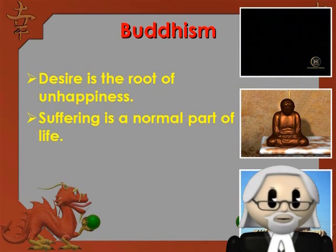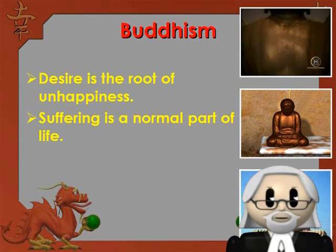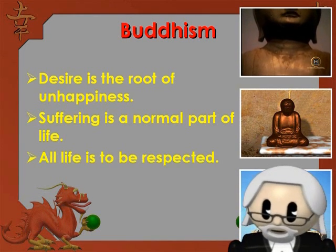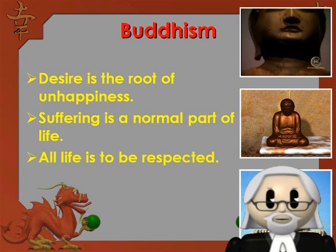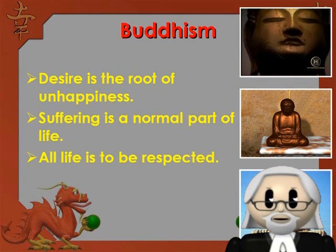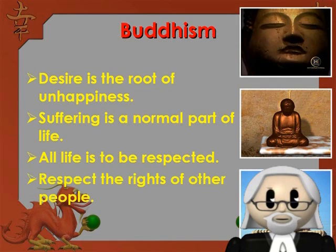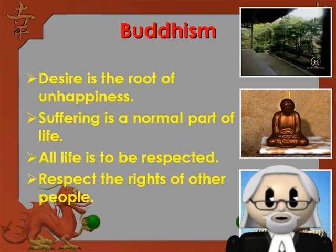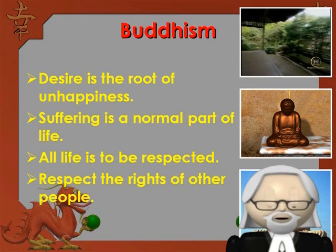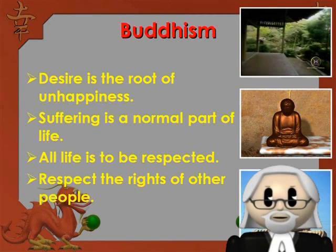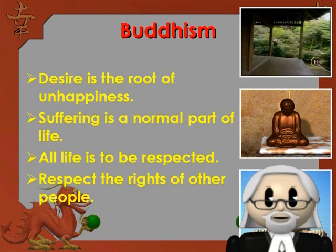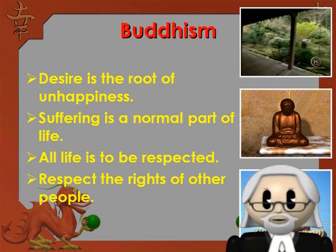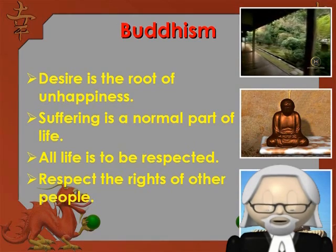The main teaching of Buddhism is that desire is the root of unhappiness — basically, wanting things makes you sad. Think about it: it's totally true. Like at Christmas, if you get tons of gifts but not the one you really wanted, you get bummed out. Buddhism also teaches that suffering happens to everyone, so just accept it — you can't change it, so why try? Lastly, Buddhism is about respect for all life: people, animals, trees, everything. Buddhists believe all life has a soul, so it should be treated well.